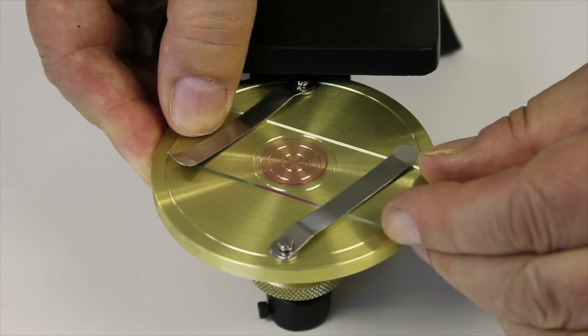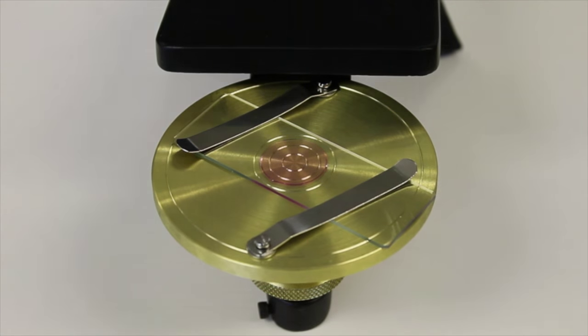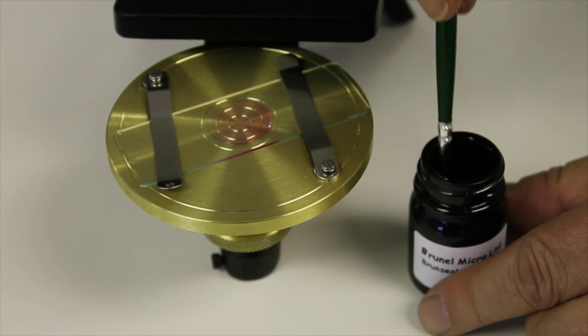The ringing cement used in this demonstration is Brunsil Black to make the process easier to see.